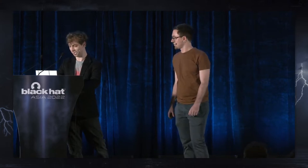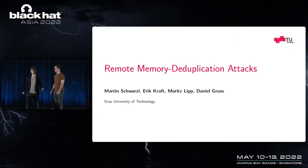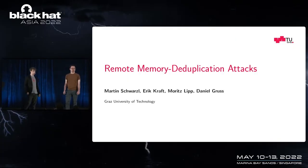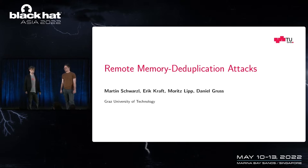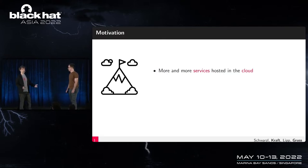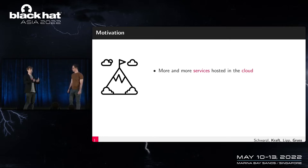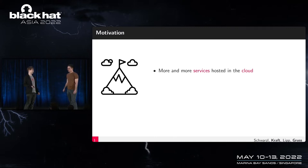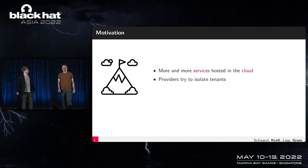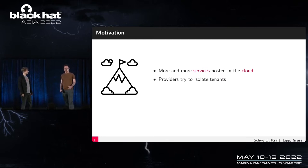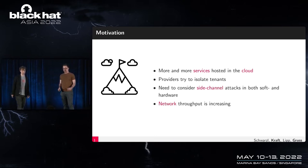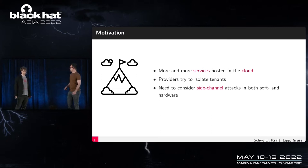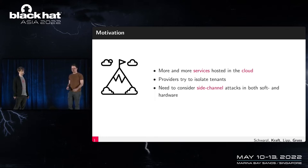The remote part is the new part — memory deduplication attacks have been around for a long time. In this talk we will focus on the remote scenario. More and more services are hosted in the cloud or on remote systems, and they store our secrets. Providers try to isolate those secrets using virtualization or similar techniques, but they still share the underlying hardware to improve utilization. Because of that shared hardware, there are multiple side channels you can exploit, both in hardware and software — for example, cache attacks like Prime+Probe, or in software, memory deduplication attacks as we present today.